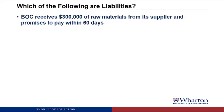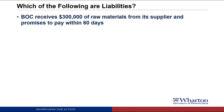BOC receives $300,000 of raw materials from a supplier and promises to pay within 60 days. This will be a liability called accounts payable — the term we use any time we owe money to a supplier. It meets the first criteria because we got the benefit of raw materials in a transaction, which now creates the obligation to pay our supplier. The amount is reasonably certain at $300,000 on the invoice. So we have an accounts payable liability for $300,000.